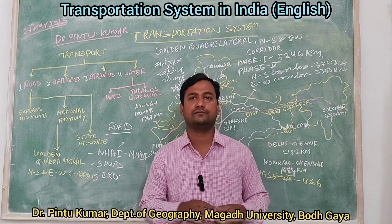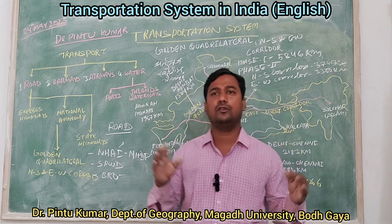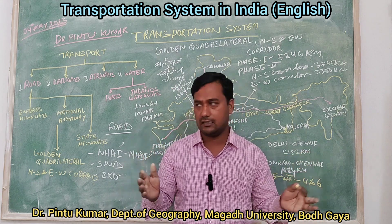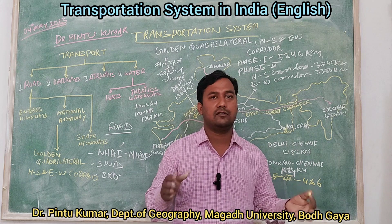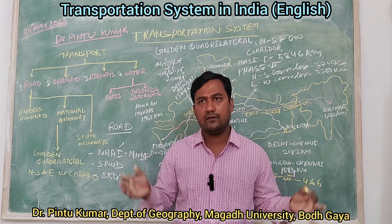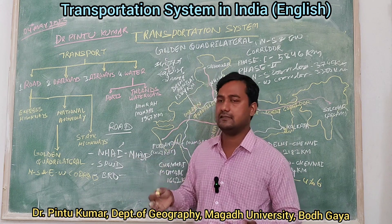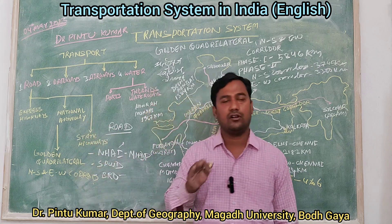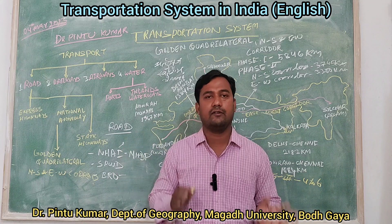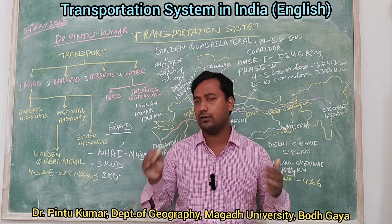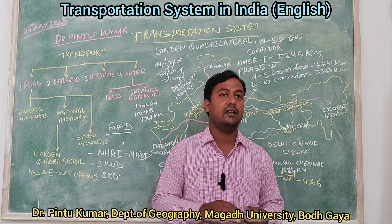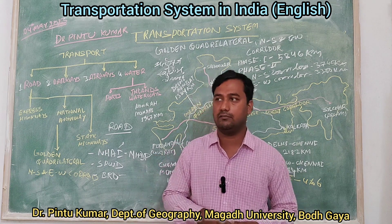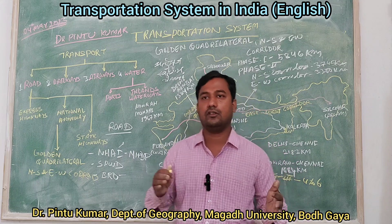The road network is maintained by two to three types of agencies. For the central government, that is the national highways; for the state government, state highways; and many small village and district roads come under state government as well. The national highways constitute two percent of the total road network system of India, yet play a very important role in GDP development and growth.